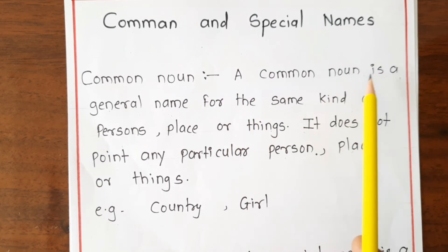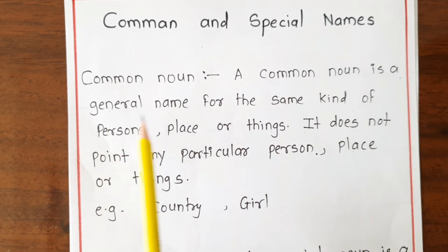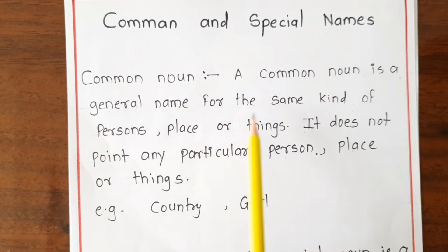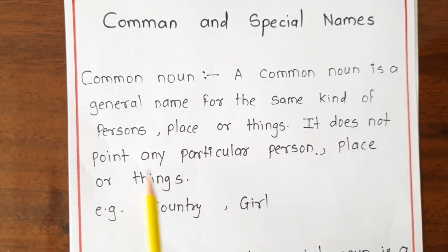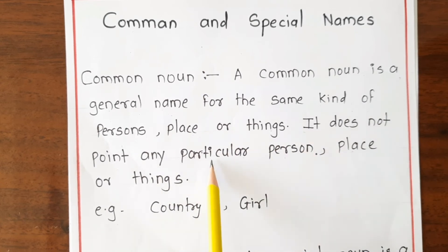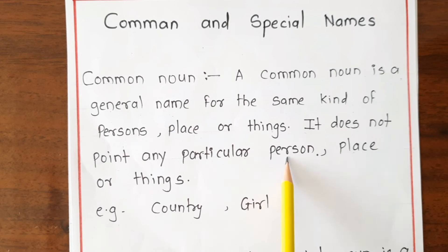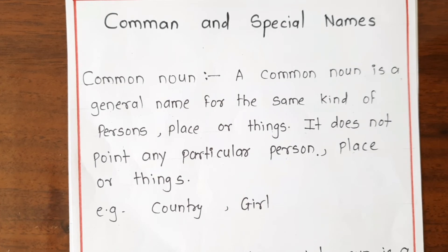A common noun is a general name given to the same kind of persons, places, or things. It does not point at any particular person, place, or thing.